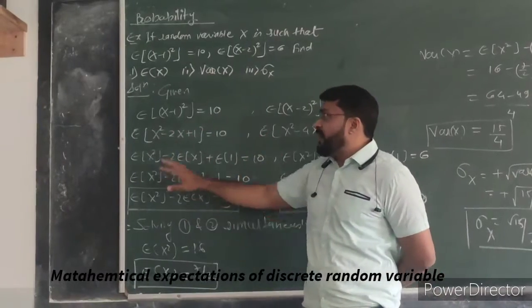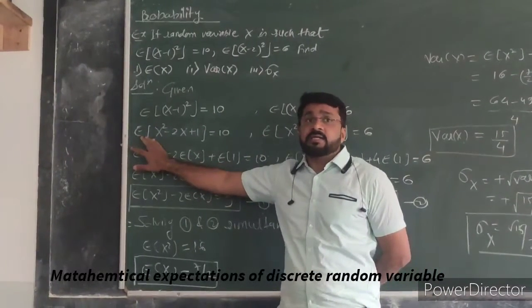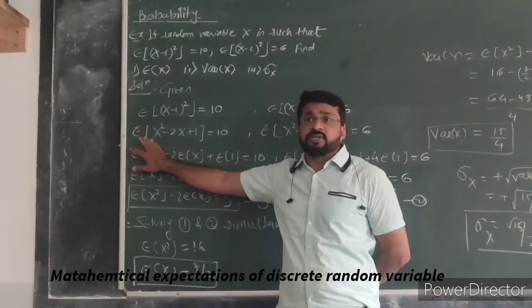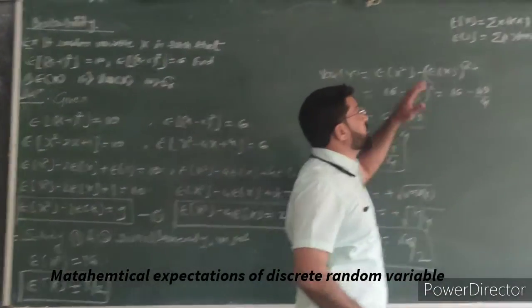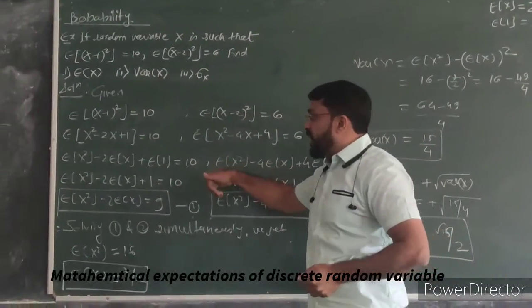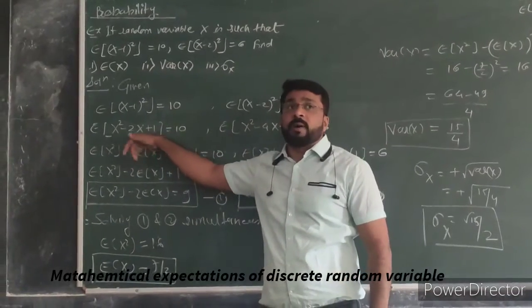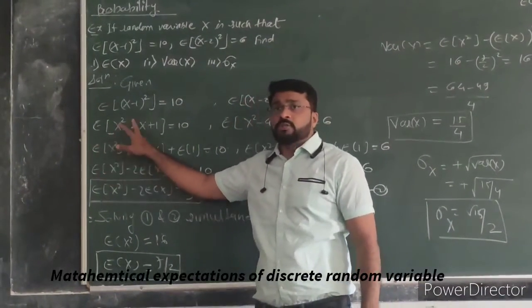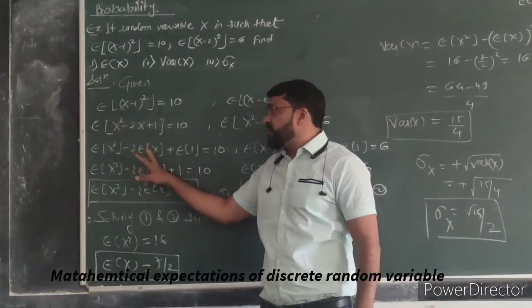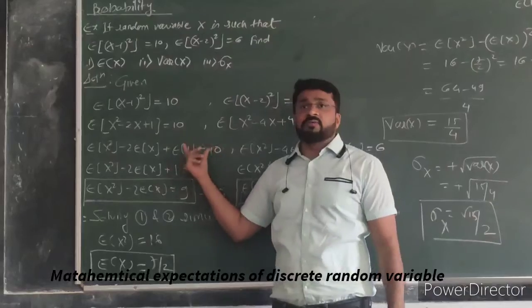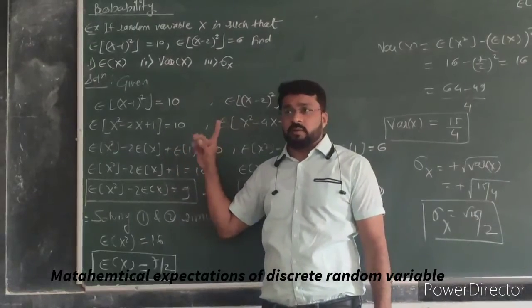Now after that, finding the expectation is finding the summation value and integration value. According to the expectation definition, finding expectation of X means finding the summation of X into f(X). If we get the summation of X, then we can get the constant from the other side. We are saying E(X²), constant from the other side minus 2E(X) plus E(1) equals 10. And what is the value of E(1)? It is 1.